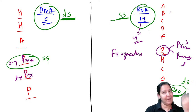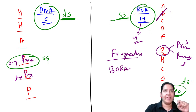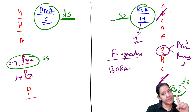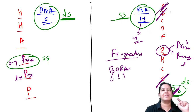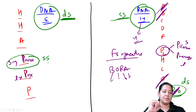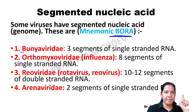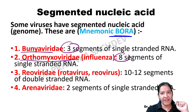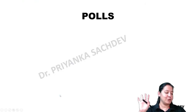BORA: B is Bunya, O is Orthomyxo, R is Reo, and A is Arena. So BORA is the mnemonic for segmented genome. You should also learn how many fragments each has: Bunya has 3 fragments, Orthomyxo has 8 fragments, Reo has 10-12 fragments, and Arena has 2 fragments.